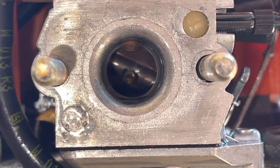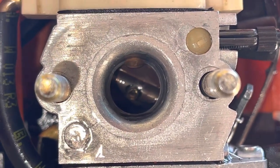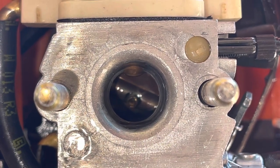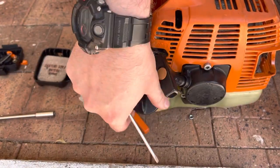So this is a Zama C1Q carburetor and as you can see it's just flooding out everywhere. I don't think it's the needle but we're going to check it anyway for sealing.